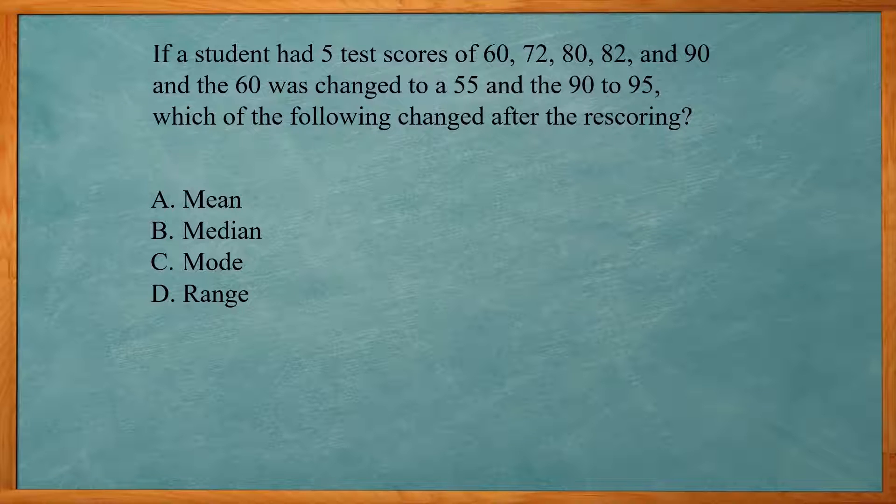This one reads, if a student has five test scores, 60, 72, 80, 82, and 90, and then the 60 was changed to 55 and the 90 to 95, which of the following change after the rescoring? So what do we end up doing? We changed the 60 to 55 and the 90 to 95. Will that change the mean? So if I subtracted five from one and added five to the other, that's basically a net change of zero. So the top of the fraction did not change. So the mean would not change. The median, we changed the outer two values. So the one in the middle still stayed the same. Our mode here, we didn't have a mode because nothing appeared more than once. So our range, remember our range is our highest value minus the lowest value. So we did change our highest value from 90 to 95 and our lowest value from 60 to 55. And actually we added 10 more to the range. So our answer here is the range did change.